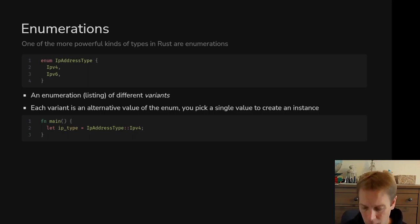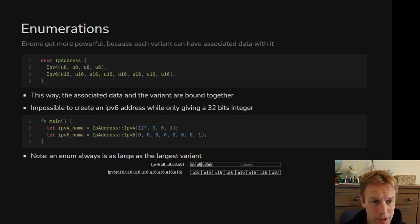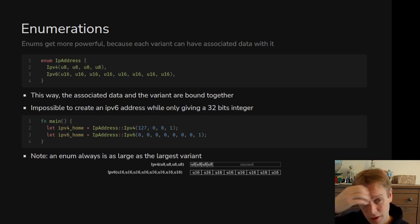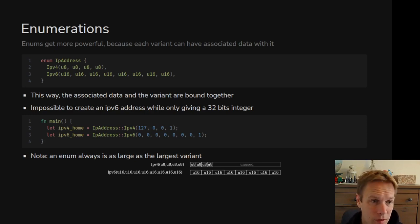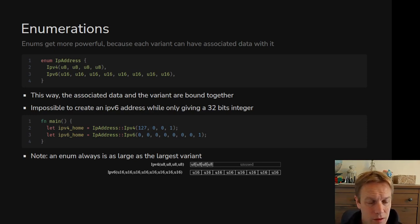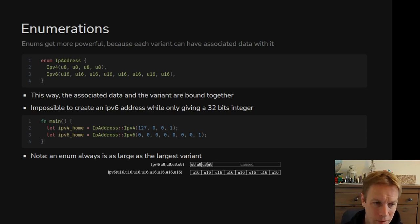We haven't seen the real power of it yet. The real power is that you can hold data inside those different alternatives. If you're an IPv4 address, you don't just want to know 'I am an IPv4 address' — you want to know what the address is. An IPv4 address consists of four U8 numbers, and an IPv6 address consists of eight U16s. So on line two we create an instance by saying IPv4 and passing in those four numbers — like 127.0.0.1 — and on the next line we make an IPv6 address by passing in eight U16 numbers.